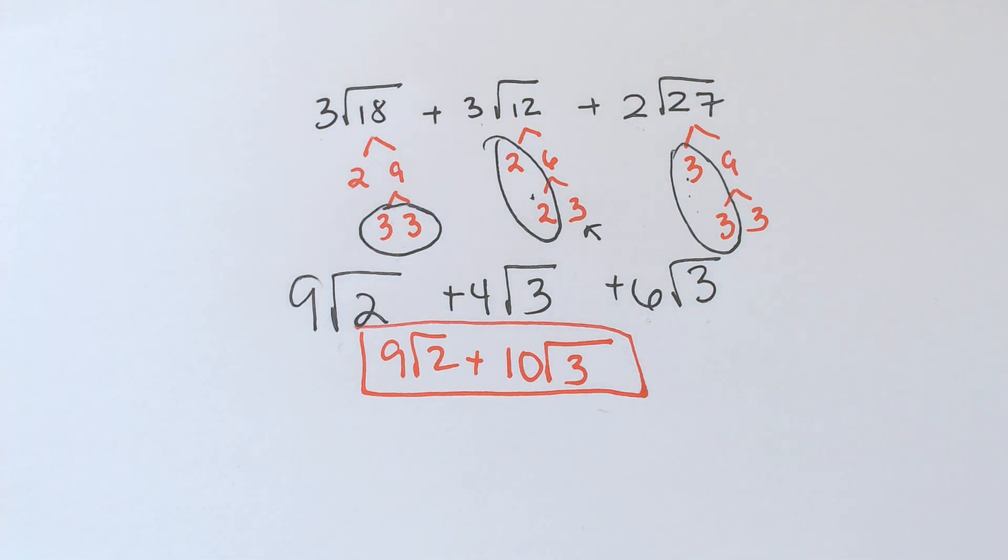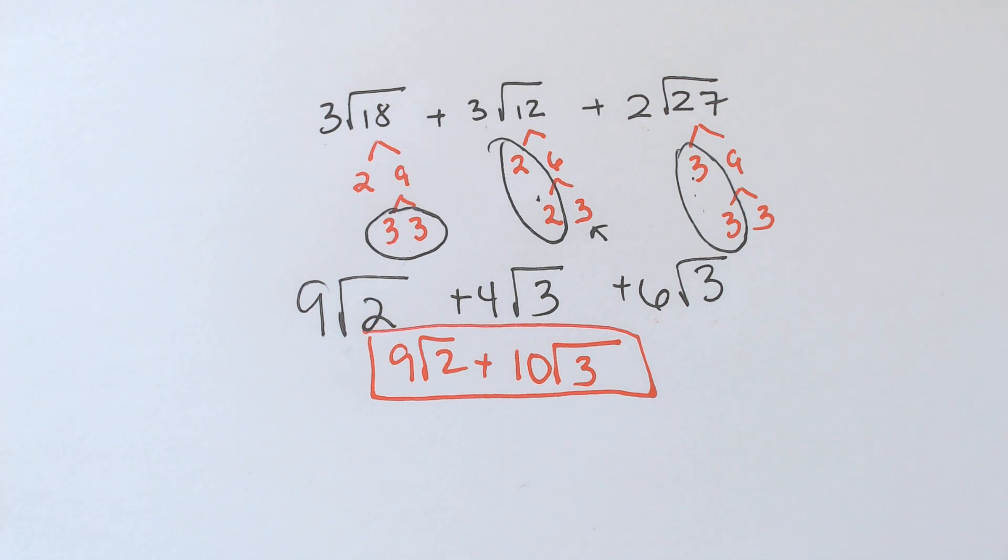And that is adding and subtracting radical square roots. I didn't do a cube root, but the cube root is the exact same thing. It's just a different simplification. You get it simplified. If they match, you can add them. If they don't match, you can't add them.